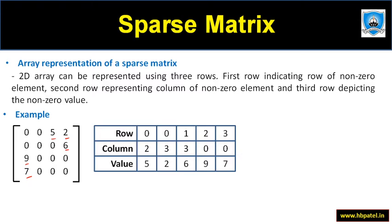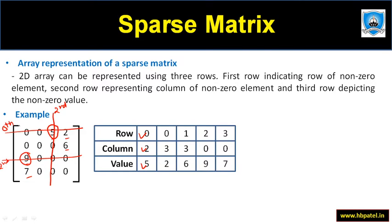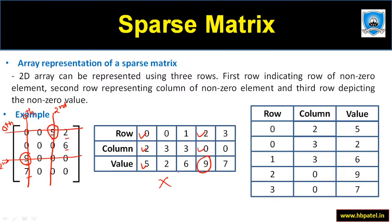There are two different ways to store. For element five: the row is the 0th row and the column is the 2nd column, so 0th row, 2nd column, element is five. For element nine: it is 2nd row, 0th column — so 2nd row, 0th column, element is nine. Normally we don't use the first way because the number of columns will increase.